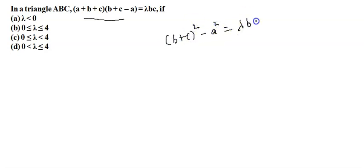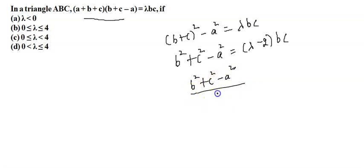So if I open this formula, it will be b squared plus c squared plus 2bc. And let us bring that bc here, it will be lambda minus 2 into bc. Or we can say b squared plus c squared minus a squared divided by bc. This is equal to lambda minus 2.